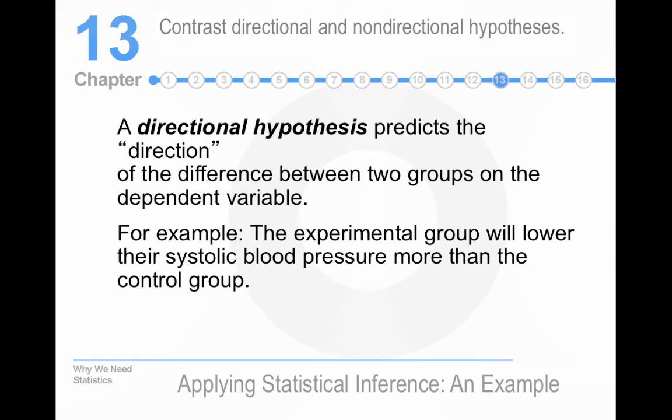This is also called a unidirectional hypothesis. You believe that the independent variable will affect the dependent variable in a very specific way. So, you can make predictions based upon that.